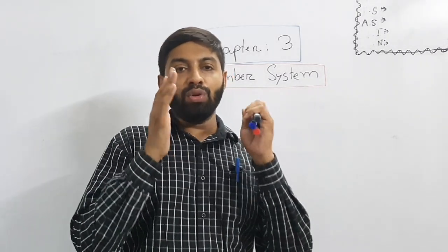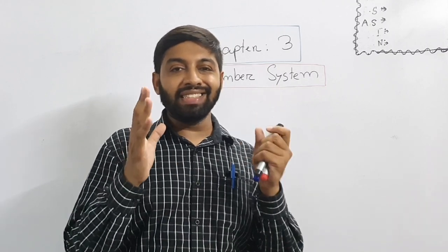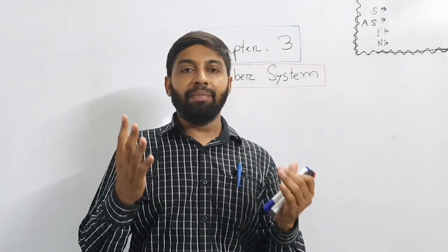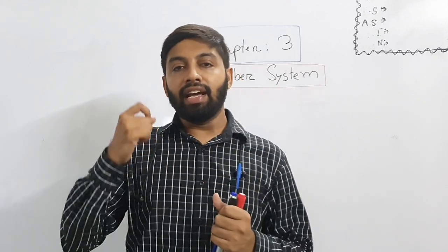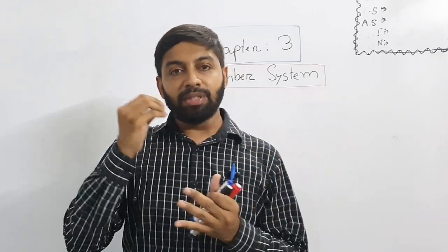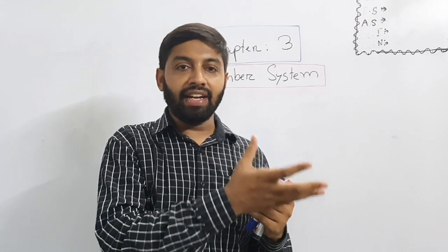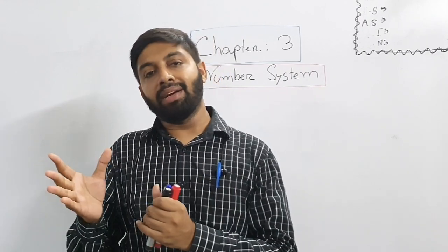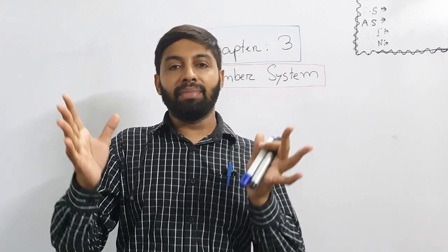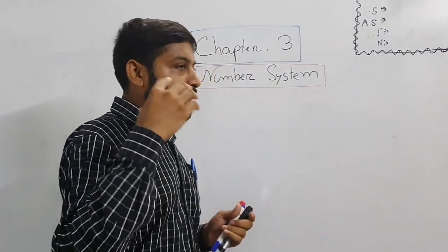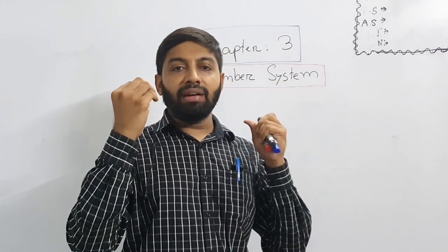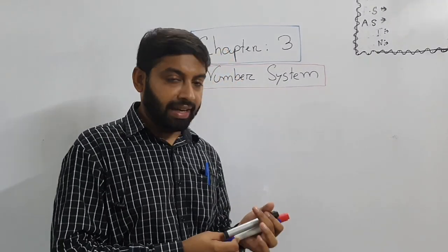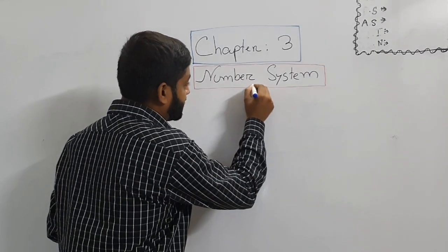First of all we all have to know what is a number system. A number system means a system to express a number in a specific system like in writing or using symbols, syntax and grammars. Now I am going to tell you how many number systems we have. Basically number system we can divide into two parts.